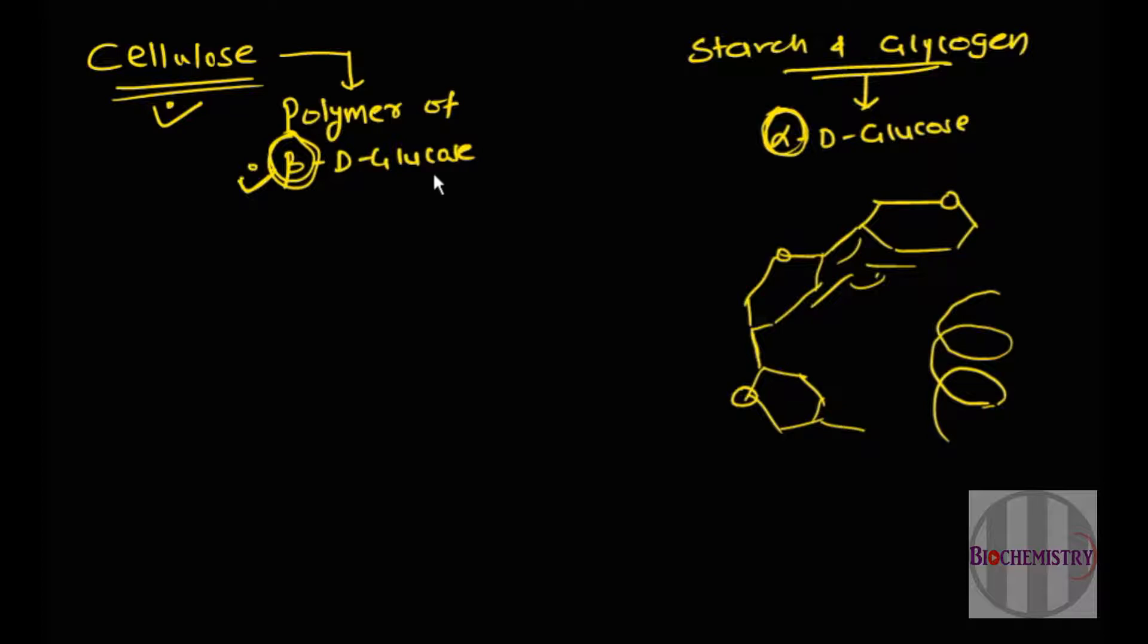In case of beta D-glucose, where the anomeric form is changed in cellulose, the successive glucose molecules are 180 degree flipped. This means the next glucose molecule will be 180 degree flipped, so this oxygen atom will be on the lower side. Let's draw the structure of that.